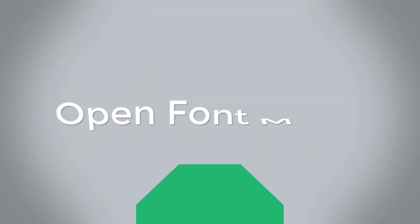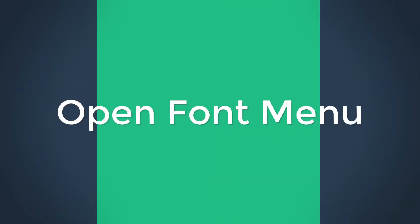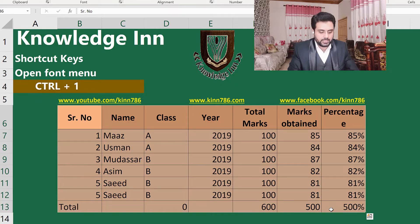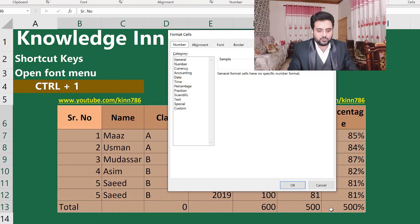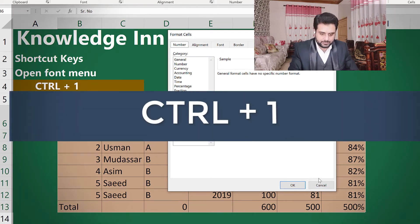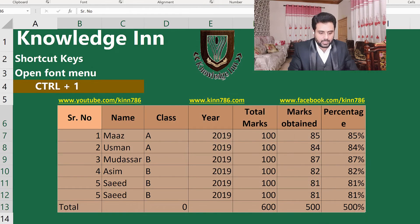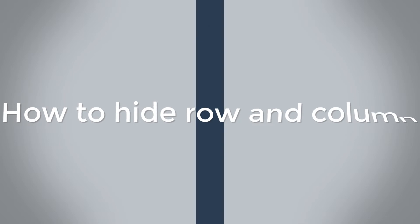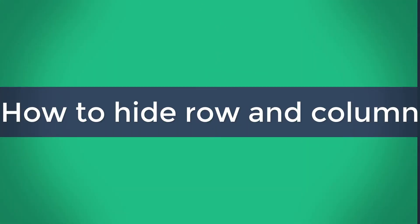Let's jump to the next shortcut key for font and cell formatting. If we want to apply some font settings, we have to press Ctrl+1 — it will open the Format Cells menu dialog box. Let's move to how to hide a row or hide a column.